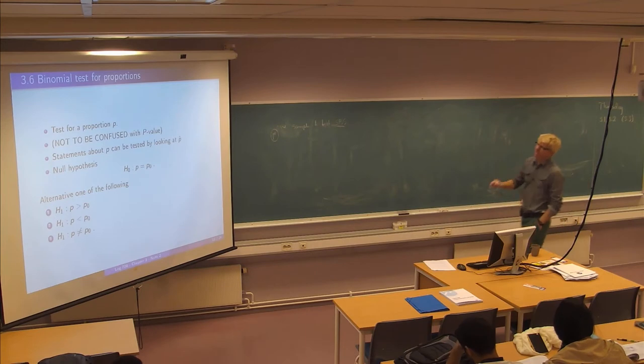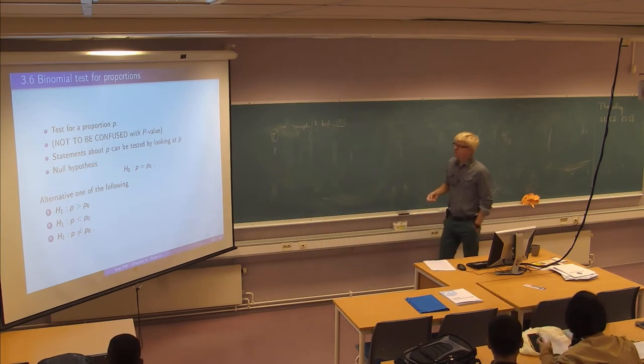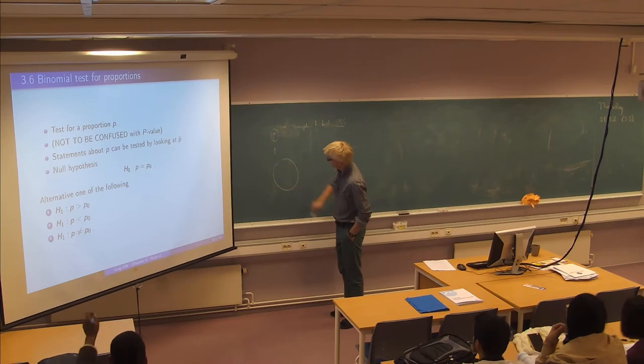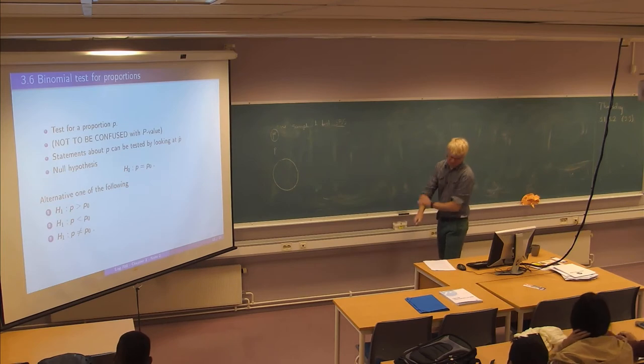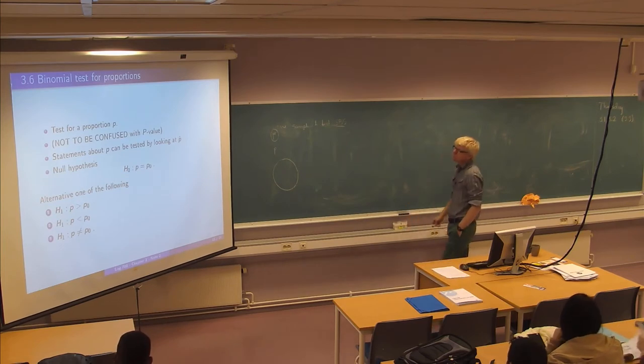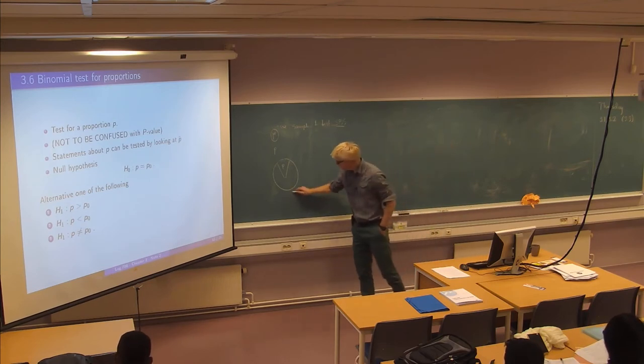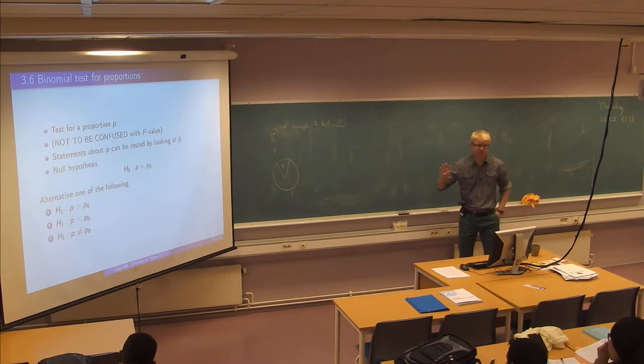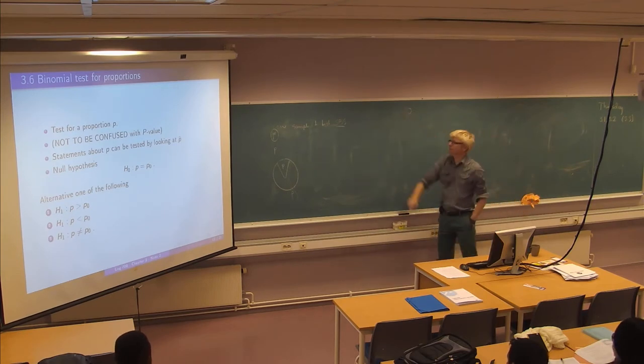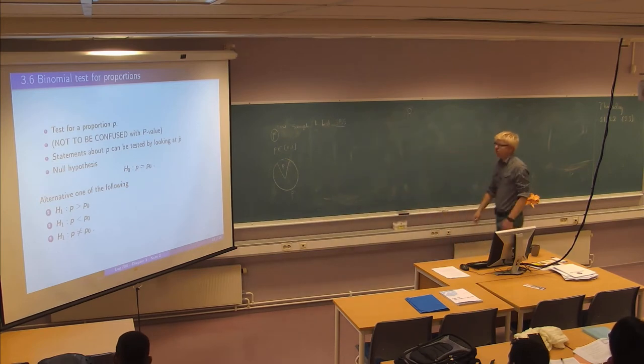And one of the other basic standard tests is for what we call a proportion in a population. So here is again a large population. And this population has a proportion of something which we call P. So now the parameter is, the unknown parameter is P here. First of all, you must not confuse this with the P value which we call capital P. So this is somewhere between 0 and 1, it's the proportion of smokers in Finland for instance.